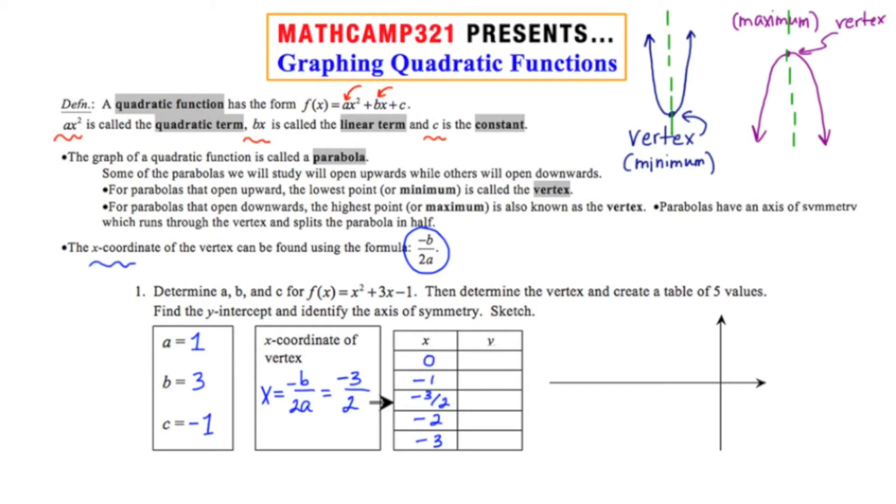To complete the table, I'm going to plug these values into the initial function and solve for y. When I plug in 0, or if I substitute 0 into the initial function, I end up getting negative 1. If I plug in negative 1 into the initial function, I get 1 minus 3 minus 1, or 1 minus 4, or negative 3.